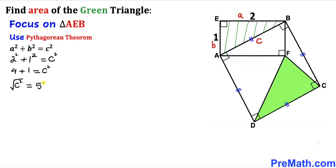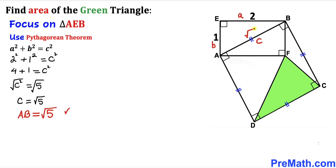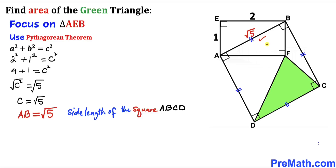Let's undo this square by taking the square root on both sides, so C turns out to be the positive square root of 5. Therefore this side length AB equals √5, and since AB is one side of square ABCD, all side lengths of this square are going to be √5.